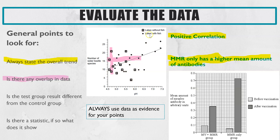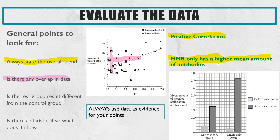You might also comment that the lakes with fish have data points from pH 6 up to 7.5 whereas lakes without fish don't. The last general point is: was a statistic used and if so what does it show? Even if there is no statistic you still mention it — for example, there is a positive correlation however Spearman's rank or the correlation coefficient was not conducted, and therefore we do not know if it is a significant positive correlation. Similarly, although there is a higher mean amount of antibodies, without a statistic we do not know if that is significantly higher.